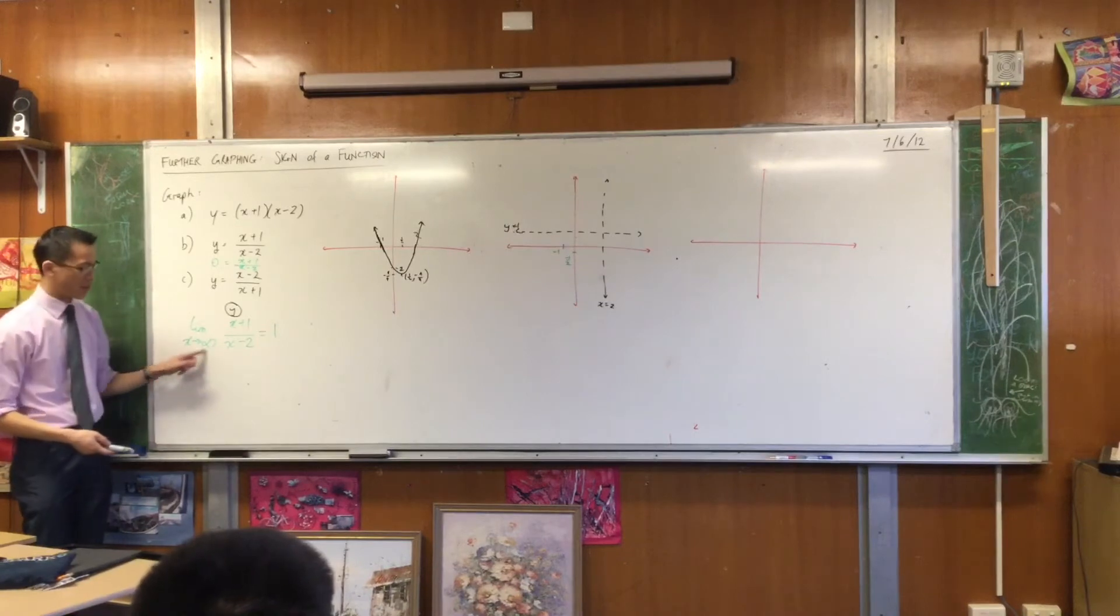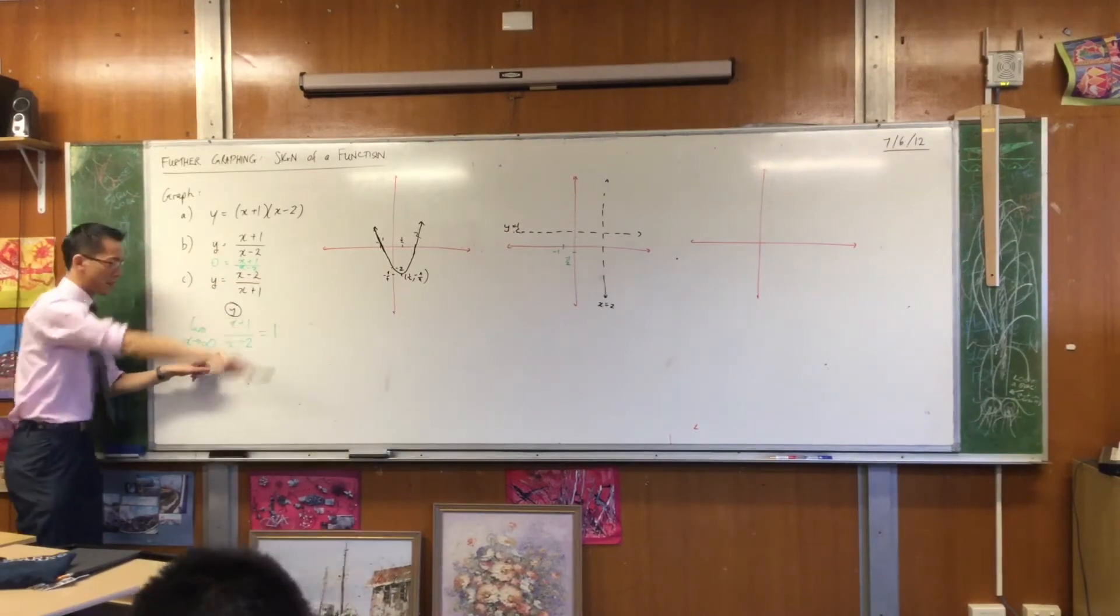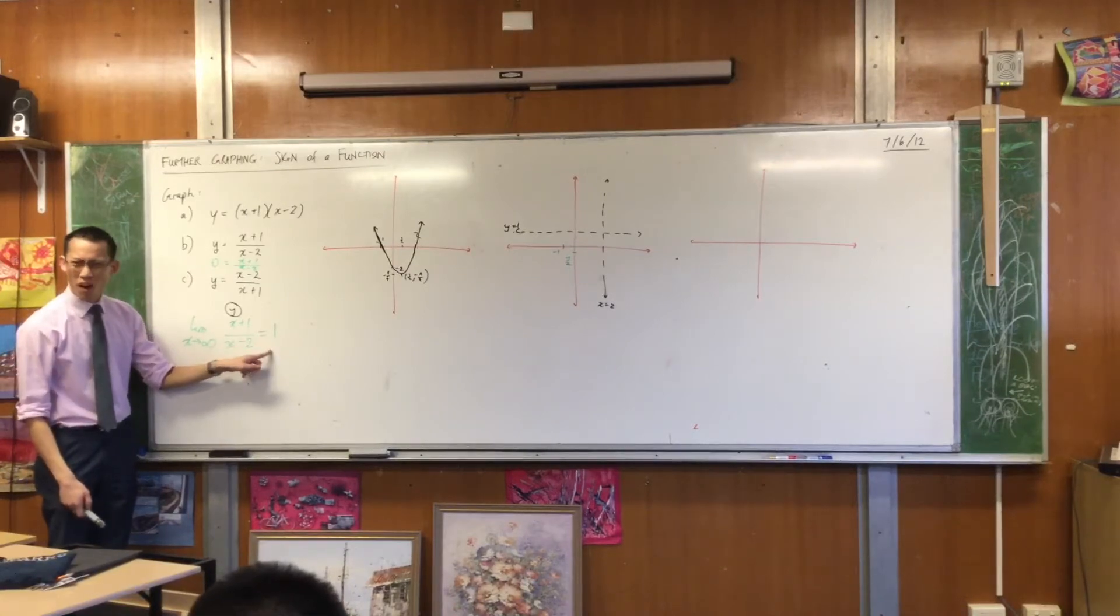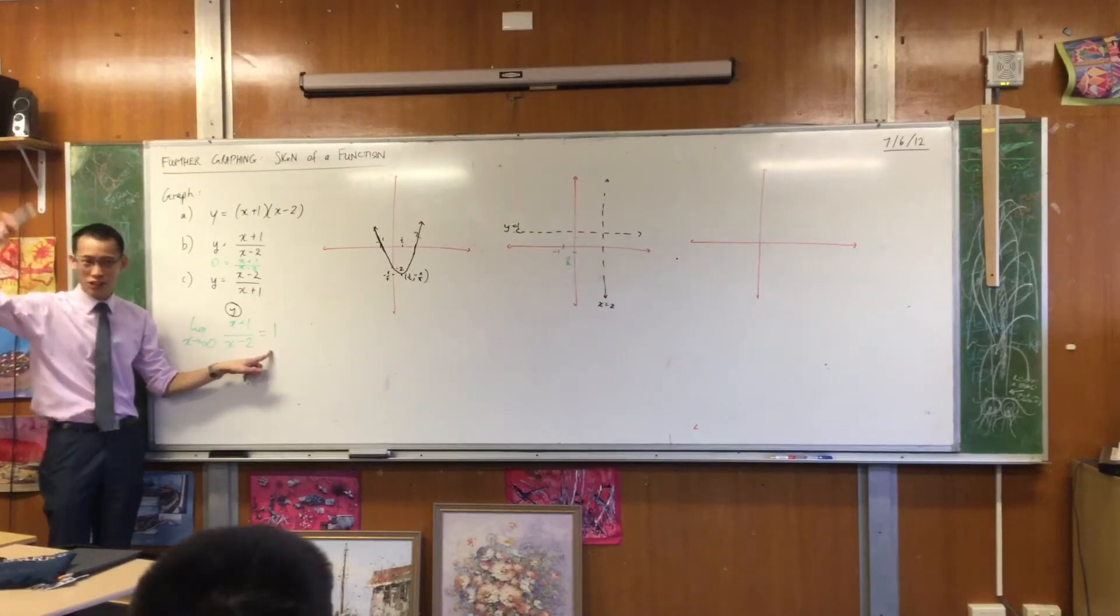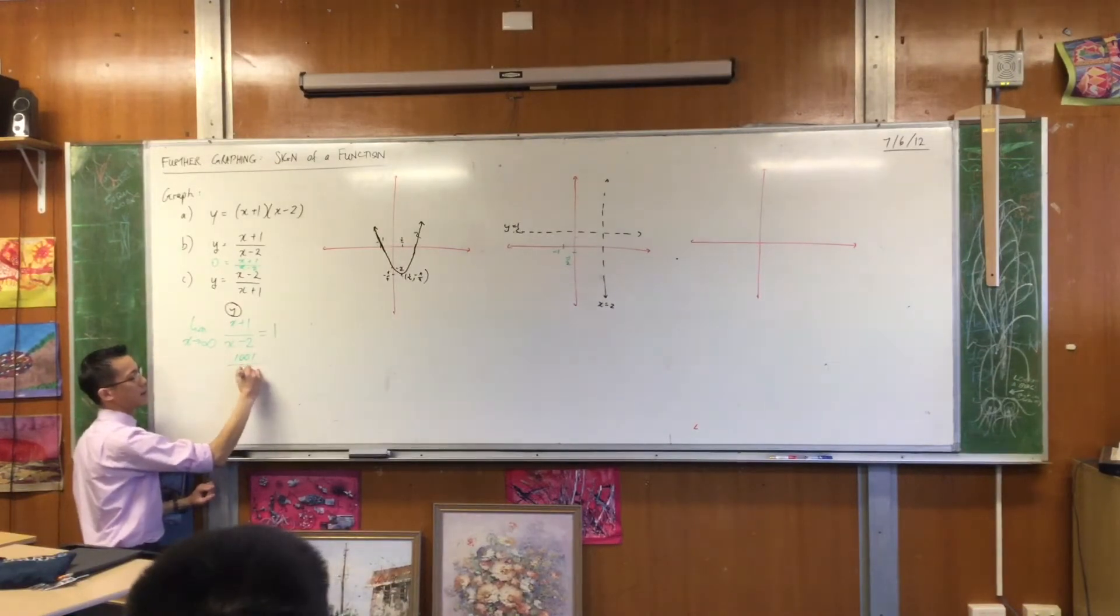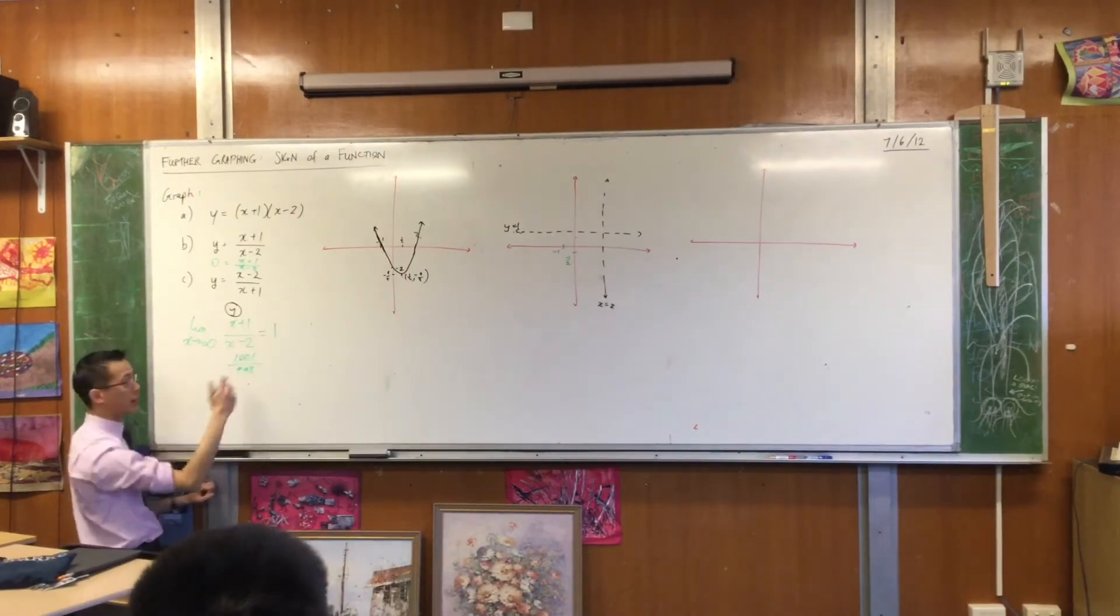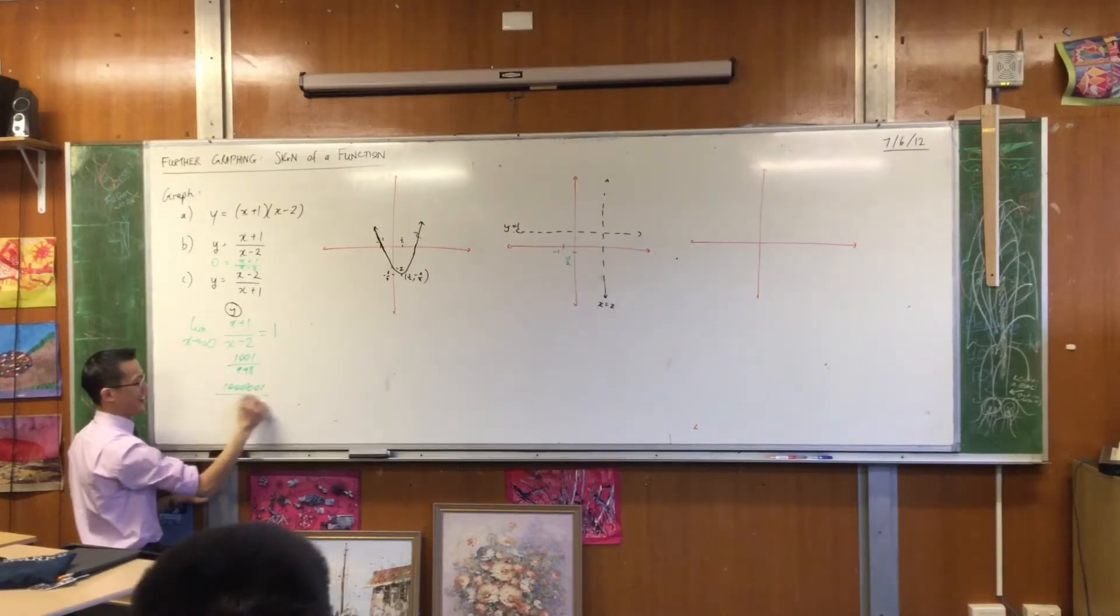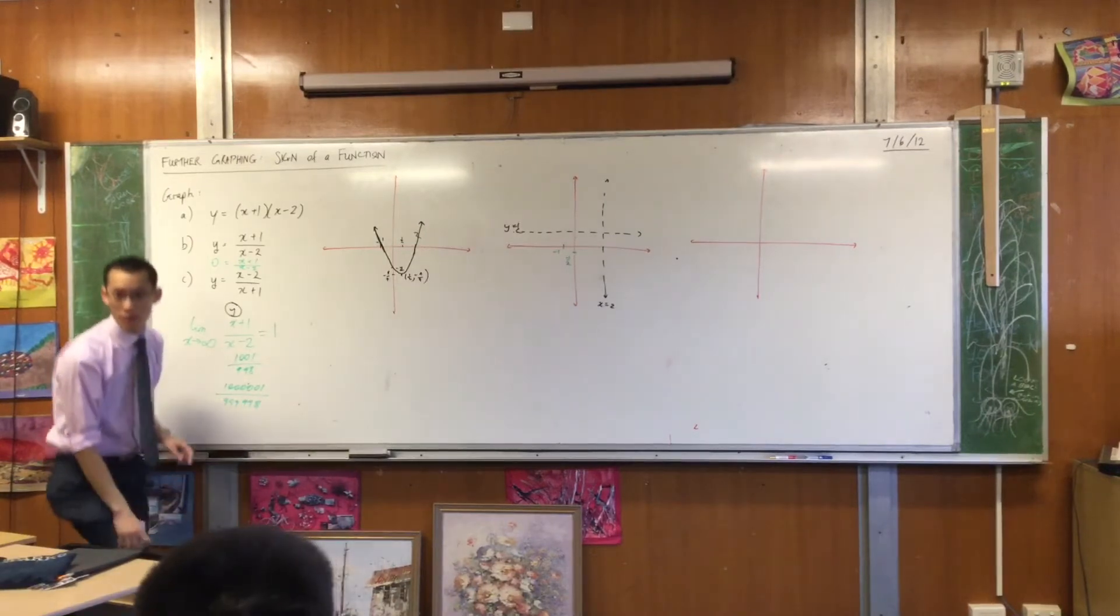Remember we said this limit as x approaches infinity, as x goes far, far over there, is going to be 1. But it's actually 1 from a particular direction. I actually gave you some numbers before. Like this. That's getting close to infinity. Or this. One more. I'll write it by this. That's getting even closer to infinity. And off you go.